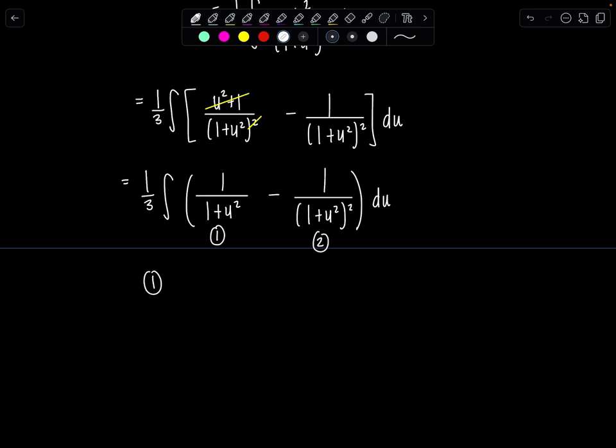So integral number one, I'll worry about the one third later. How's that sound? One over one plus u squared du, that's going to be tan inverse of u. I'm going to say plus c1. I'll save the final c with no subscript for the end of the problem.